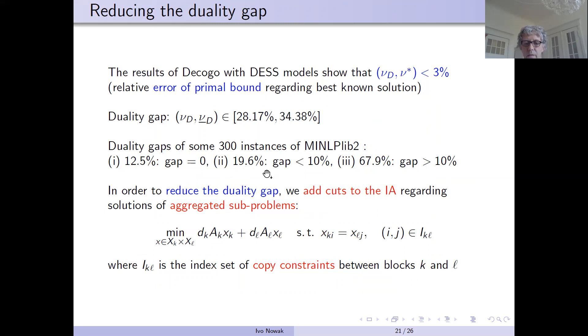19% of the cases gap lower than 10%. And for most of the cases, we had a large duality gap. And therefore, we tried now we are trying now to improve the duality gap.